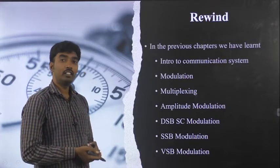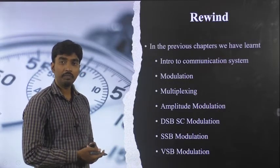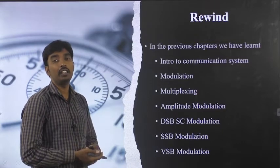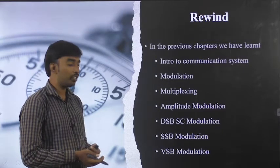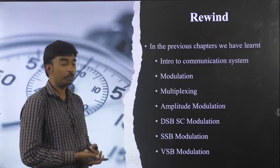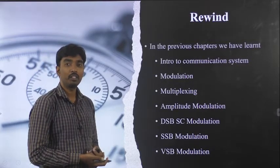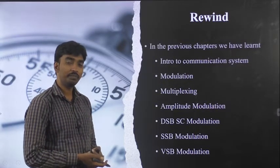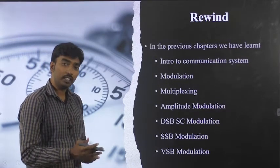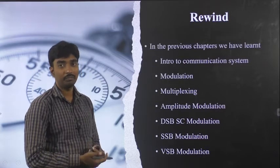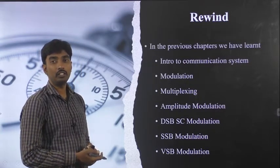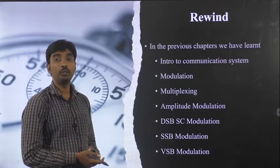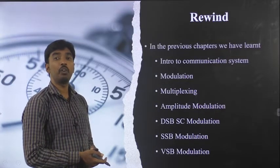To transmit video signals, we discussed VSB (vestigial sideband) modulation, where part of the sideband is removed. VSB modulation is used for video transmission, especially in television. For video transmission we use VSB modulation, and for audio transmission we use FM — the frequency modulated signal — which we are going to discuss in this unit.